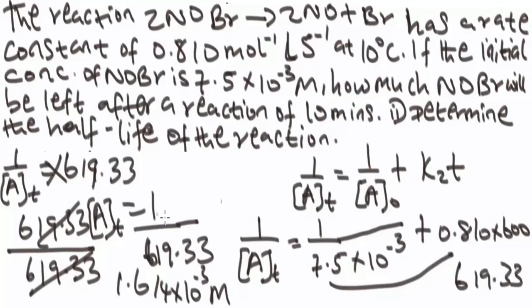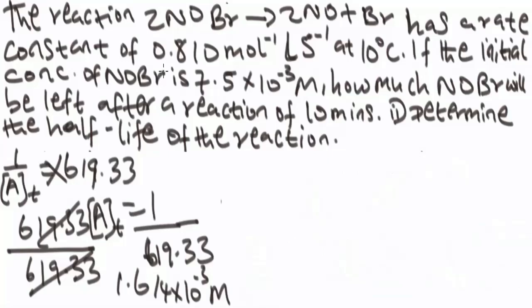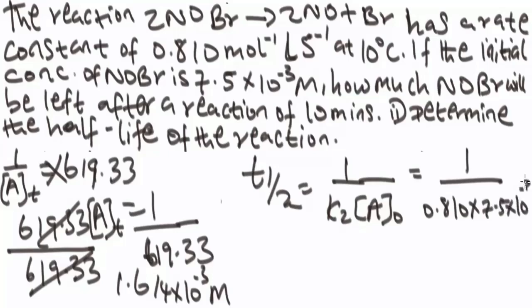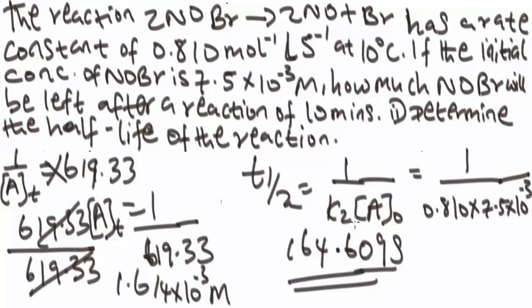For the half-life of this second order reaction: t_(1/2) = 1 over (k_2 times A_0) = 1 over (0.810 times 7.5 times 10 to the power minus 3) = 164.09 seconds. Note that the half-life of a second order reaction is dependent on the initial concentration — an inverse proportionality.